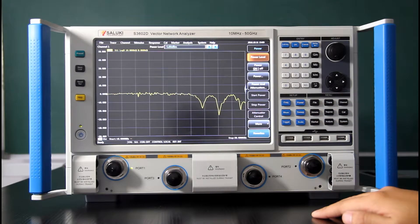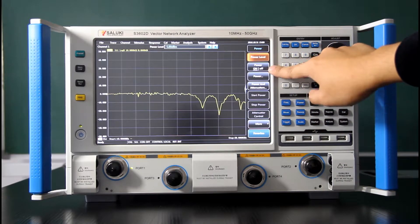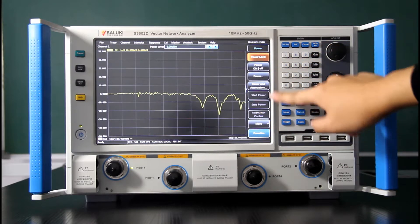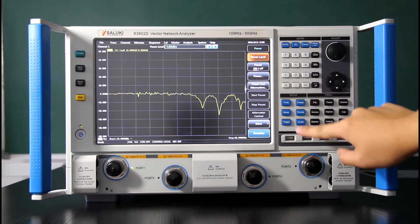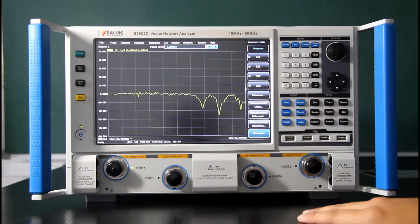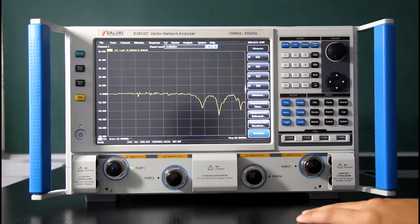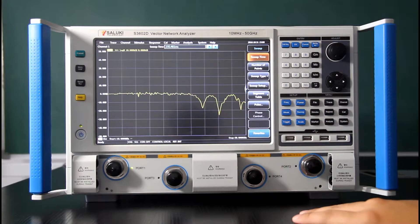Then the power. It will set the output power of each port. That's the power level. And the power on and off. And the attenuator are also configured here. Then measure. This button will show you what parameter do you want to measure. S11 or S21 or some other parameters.